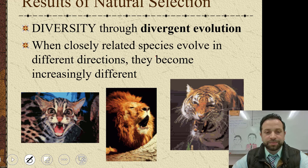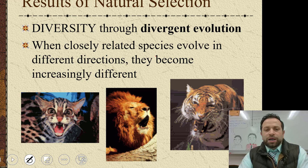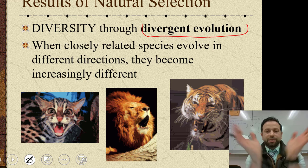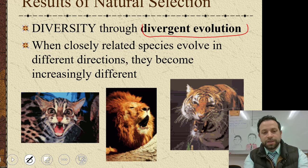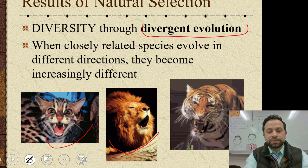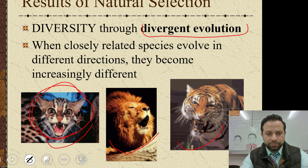Let's get into divergent evolution — diversity through divergent evolution. The term diverge means to go in separate directions, so it's when closely related species evolve in different directions and become more different as they continue to evolve. Examples include the house cat, lion, and tiger.